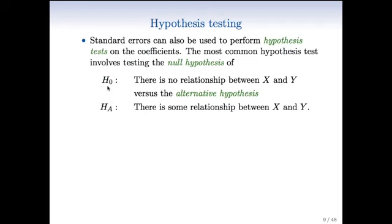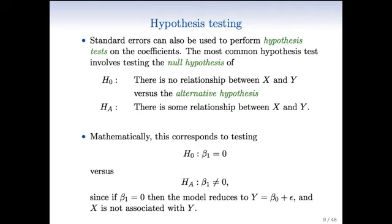What's called the null hypothesis is that there's no relationship between X and Y. In other words, beta_1 equals zero. That's an equivalent statement. The alternative hypothesis is that there is some relationship between X and Y. In other words, beta_1 is not zero. And beta_1 could be positive or negative.